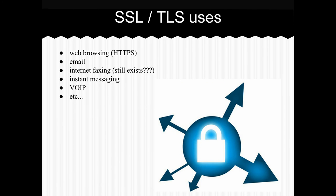When SSL and TLS were designed, they were meant to secure the internet. The internet was not designed with security in mind, and the Netscape engineers tried to secure things like web browsing, email, instant messaging, and VoIP. SSL and TLS also have many more uses extending to update chains — contacting the web server or update server and downloading the correct patches. It touches almost every aspect of most software and communication.